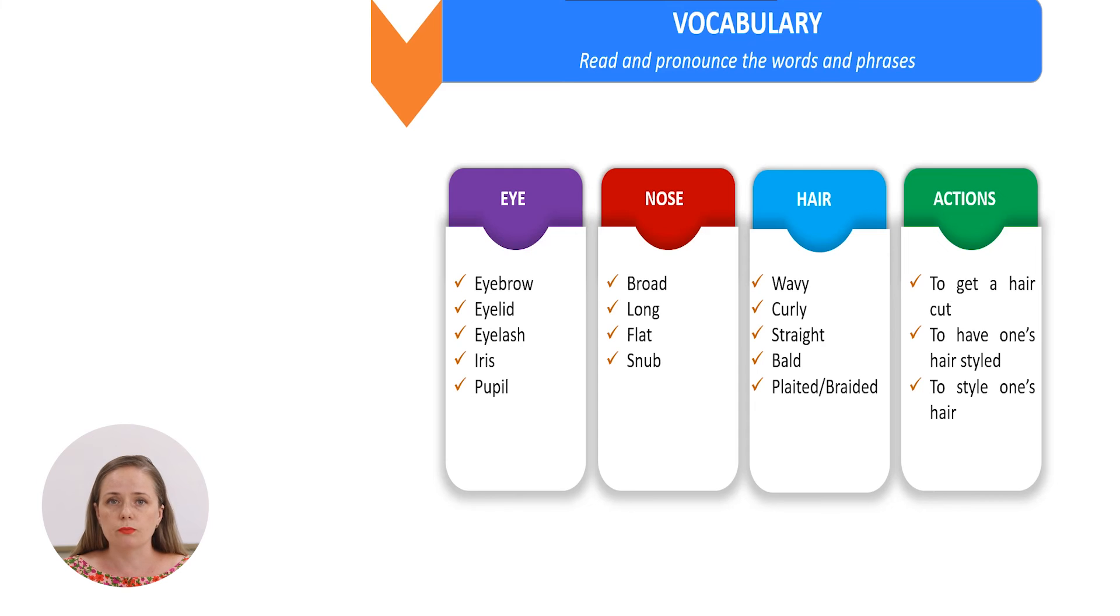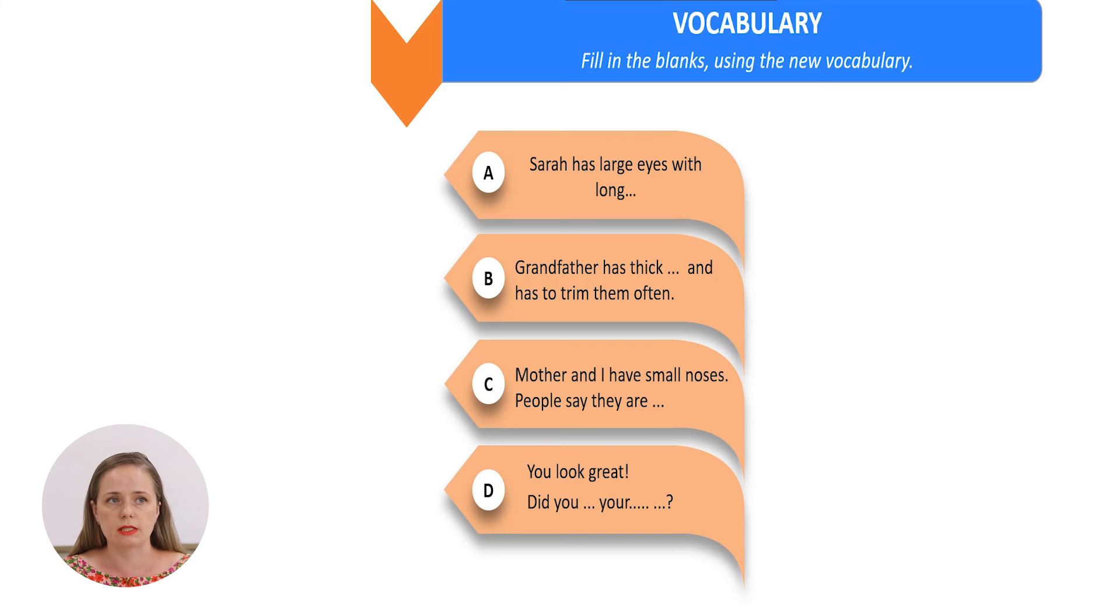And it's time now to use these words in context. Let's see this activity. Sarah, you'll have to fill in the blanks using this new vocabulary. Sarah has large eyes with long... Grandfather has thick... and has to trim them often. Mother and I have small noses. People say they are... You look great! Did you... your... So you have time to think and to insert or to fill in the right words from the vocabulary.